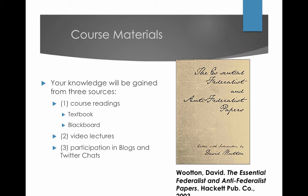For course materials, you can see what the book looks like — it is very easy to find. It's a 2003 copy of the Essential Federalist and Anti-Federalist Papers. It's not an all-inclusive selection, but it is the essential ones, and it's fairly cost-effective, which is one reason I use it. I think it's important to expose students to what was being talked about when the Constitution was written and when these institutions came about. Your knowledge will be gained from three sources: the course readings, which primarily come from the textbook but some will be on Blackboard; video lectures like this one; and participation in blogs and Twitter chats — which we'll break down in a minute.